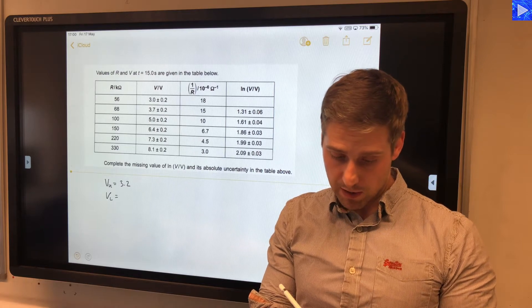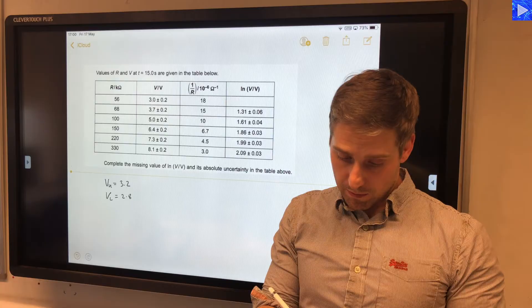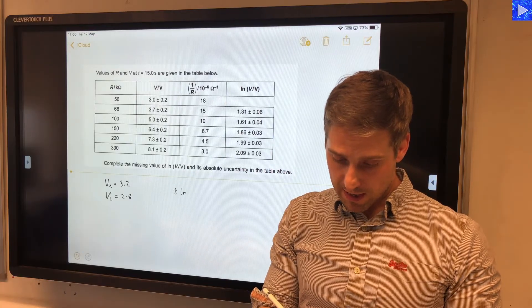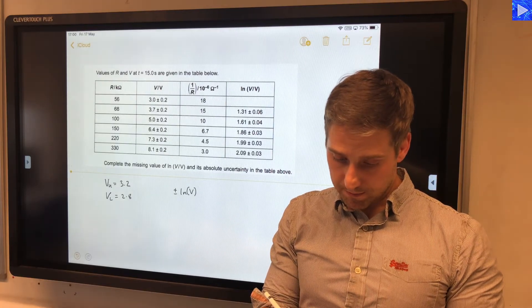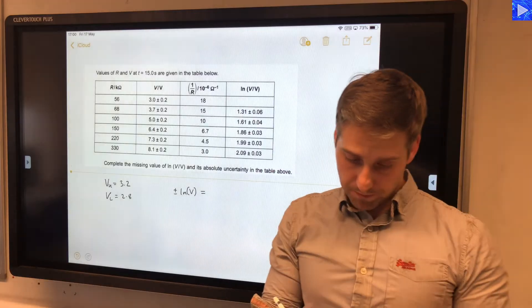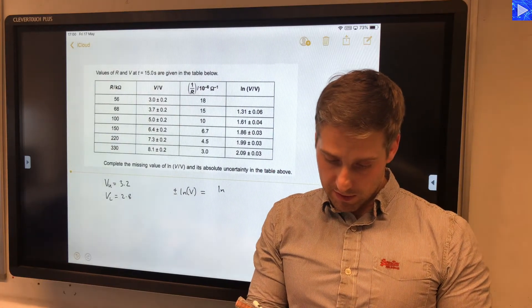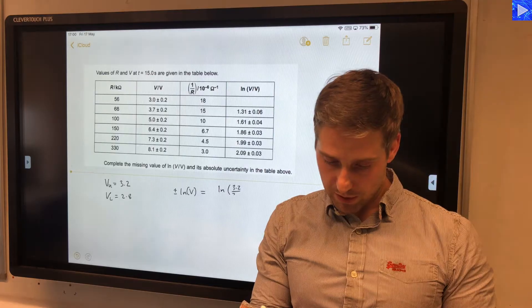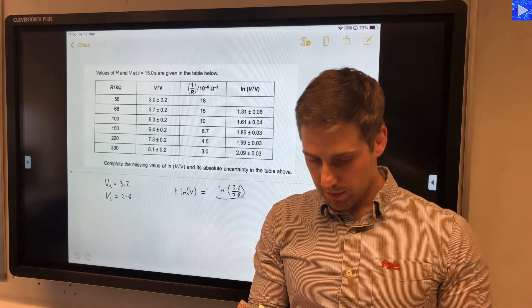And our lower value is 2.8. So the uncertainty in log V is equal to—bear in mind this is a natural log—so 3.2 over 2.8 divided by 2.